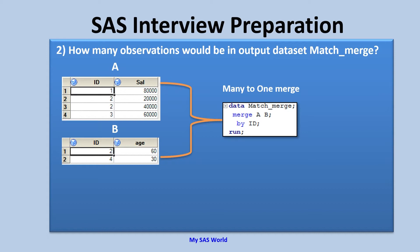Let's move on to the next question: how many observations would be in the output data set for a match merge? We have dataset A with two variables and four observations, including a duplicate observation for ID 2. Dataset B has two variables — ID and age — with two observations and no duplicate observations. This is a many-to-one merge. The program is: data match_merge; merge a b; by id; run.